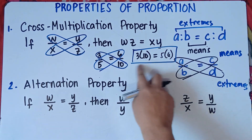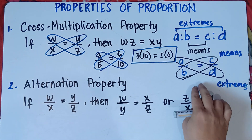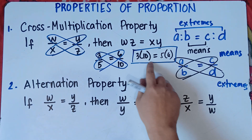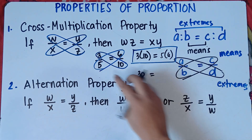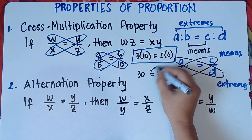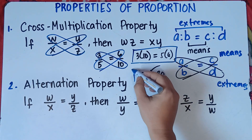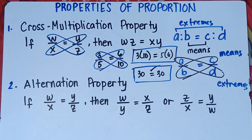If you multiply, you get the same answer because the product of the means equals the product of the extremes. 3 times 10 is 30, and 5 times 6 is also 30. So 30 equals 30 — that's true for the cross multiplication property. You simply do the cross multiplication.